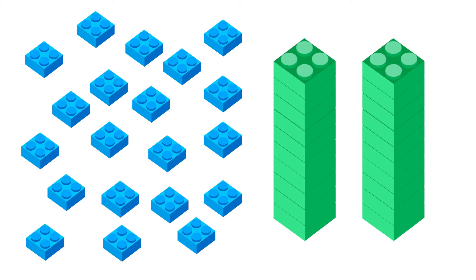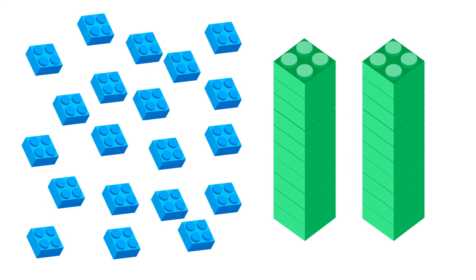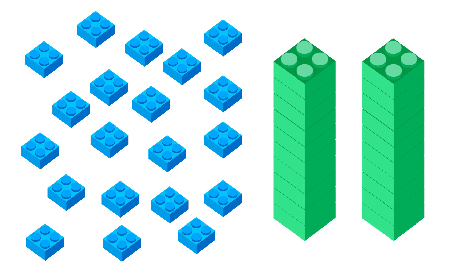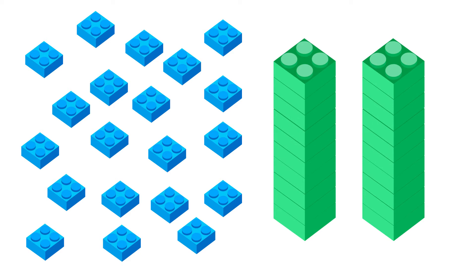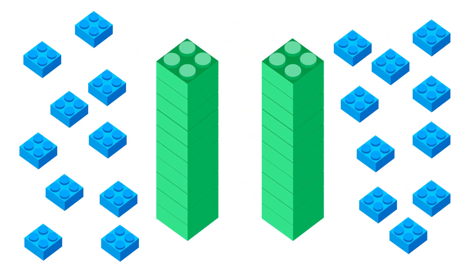So why do we need these rods? We can have our twenty blocks like this or like this. Which group is easier to count, do you think? These loose ones or the ones in the rods? The rods of course. All I have to do is count up to two and here up to twenty.